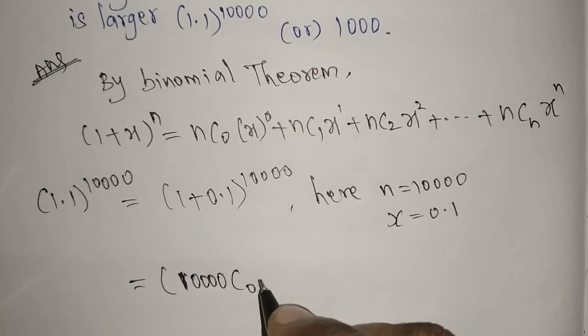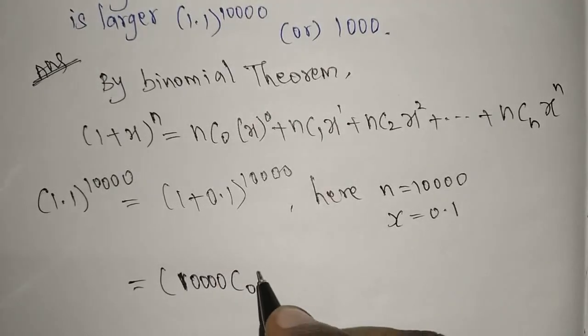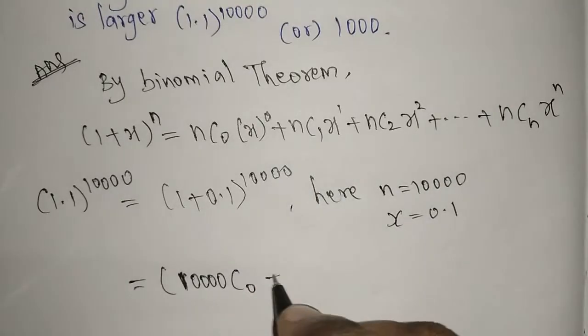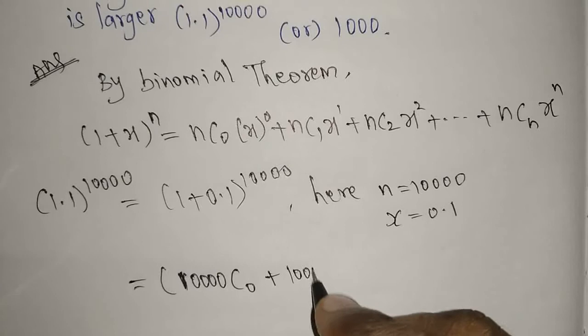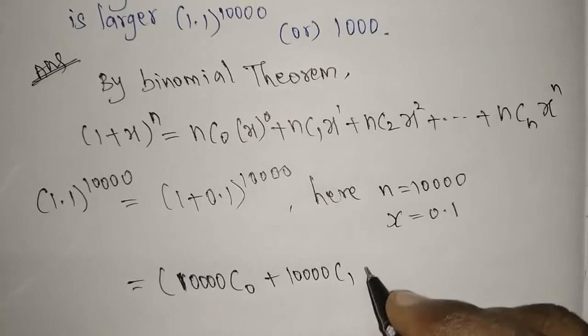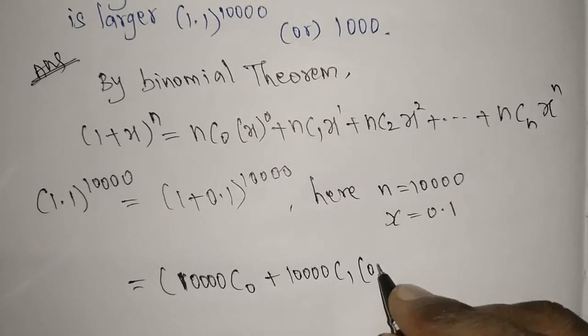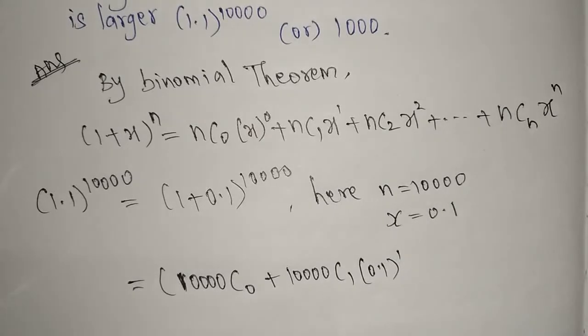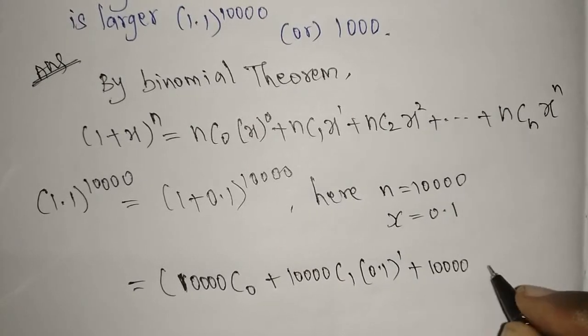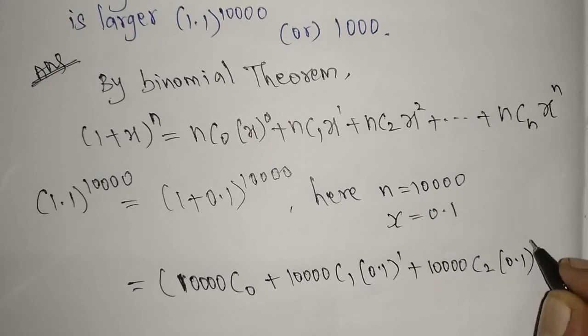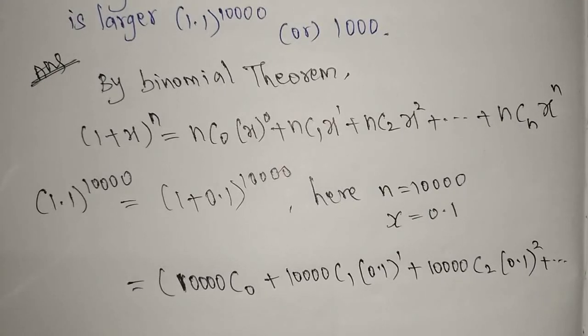Now you will start to simplify this. This bracket, no need. Here C0, you will get 1 only directly. Next, 10000C1·(0.1)^1 plus 10000C2·(0.1)^2.